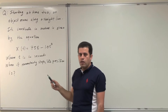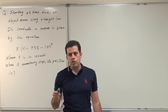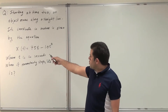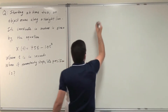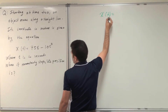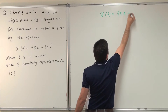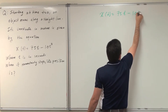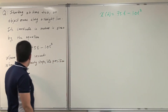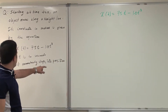This covers the topic of motion in one dimension or motion in a straight line. The equation of motion is given as x of t for this particle or object. x of t equals 75t minus t cubed. The question is asking for when it momentarily stops, find its position.